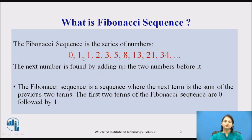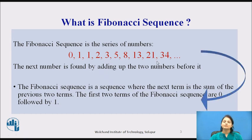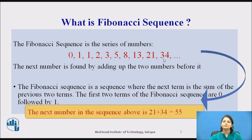The first two terms of the Fibonacci sequence are 0 and 1. Here you can see: 0, 1, 0 plus 1 is 1, 1 plus 1 is 2, 1 plus 2 is 3, 2 plus 3 is 5, 3 plus 5 is 8, 8 plus 13 is 21, 13 plus 21 is 34. To calculate the next term, we add 21 plus 34, which gives 55.